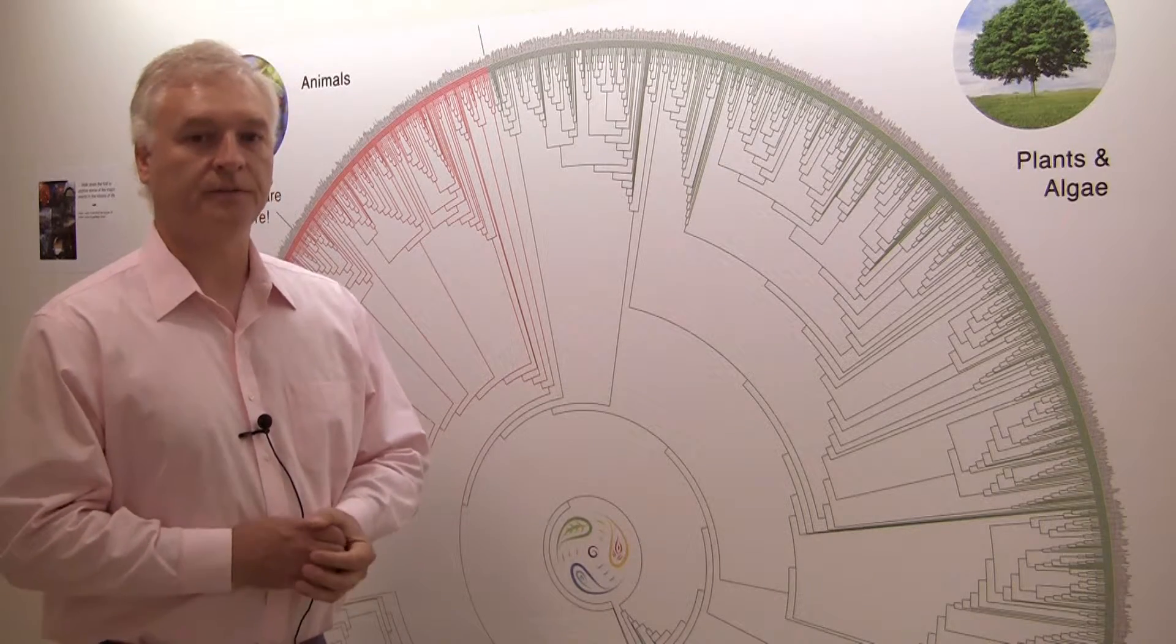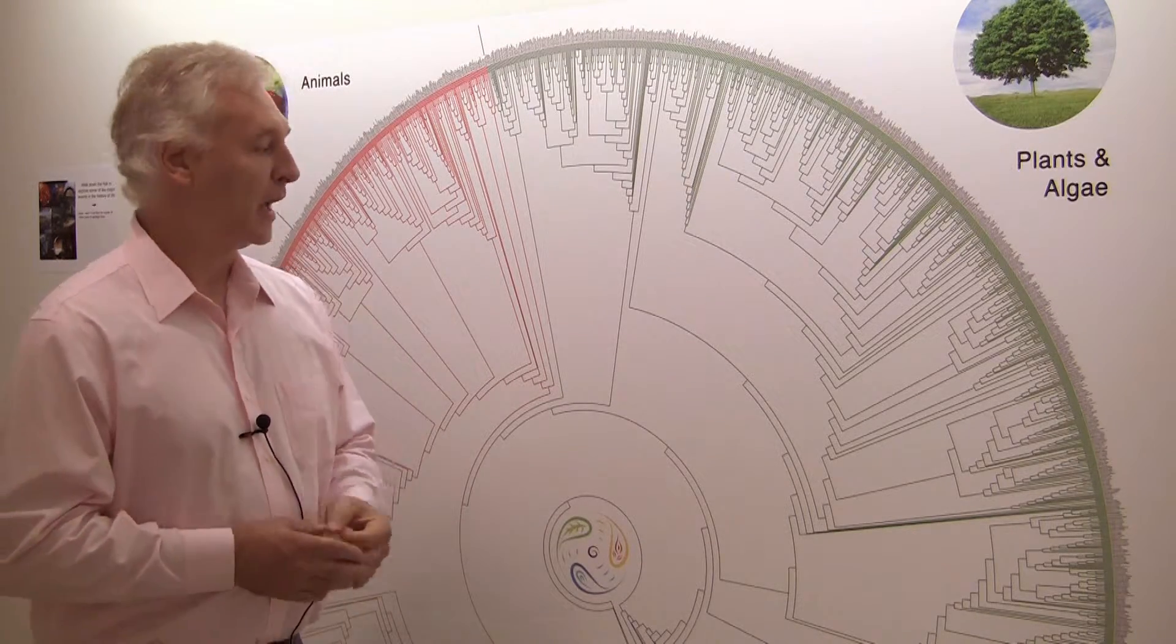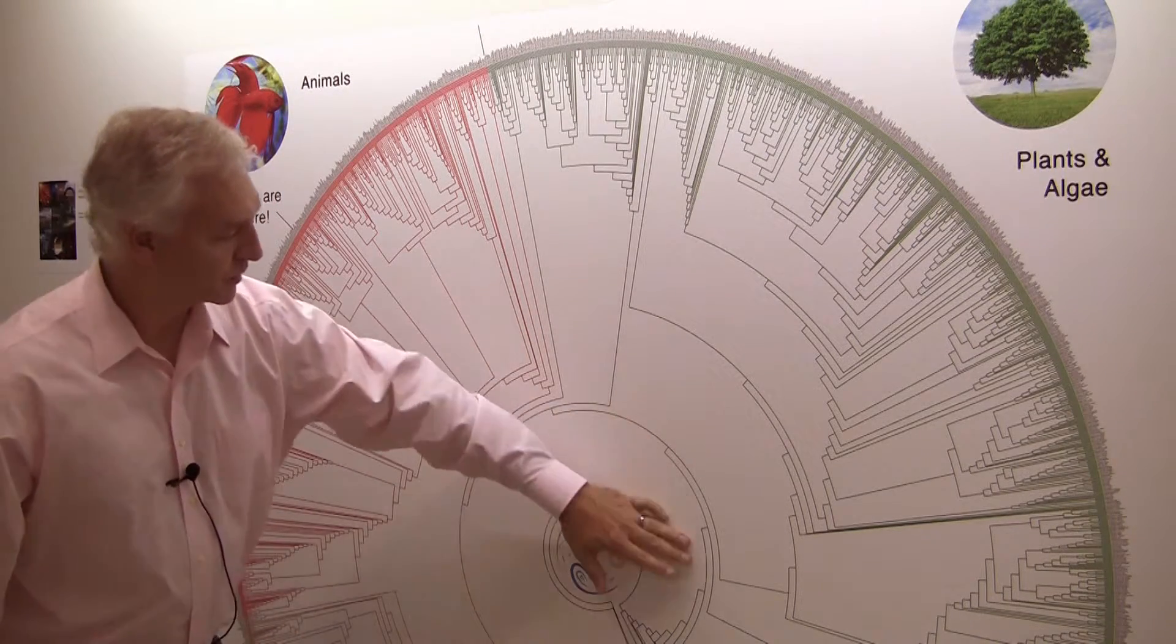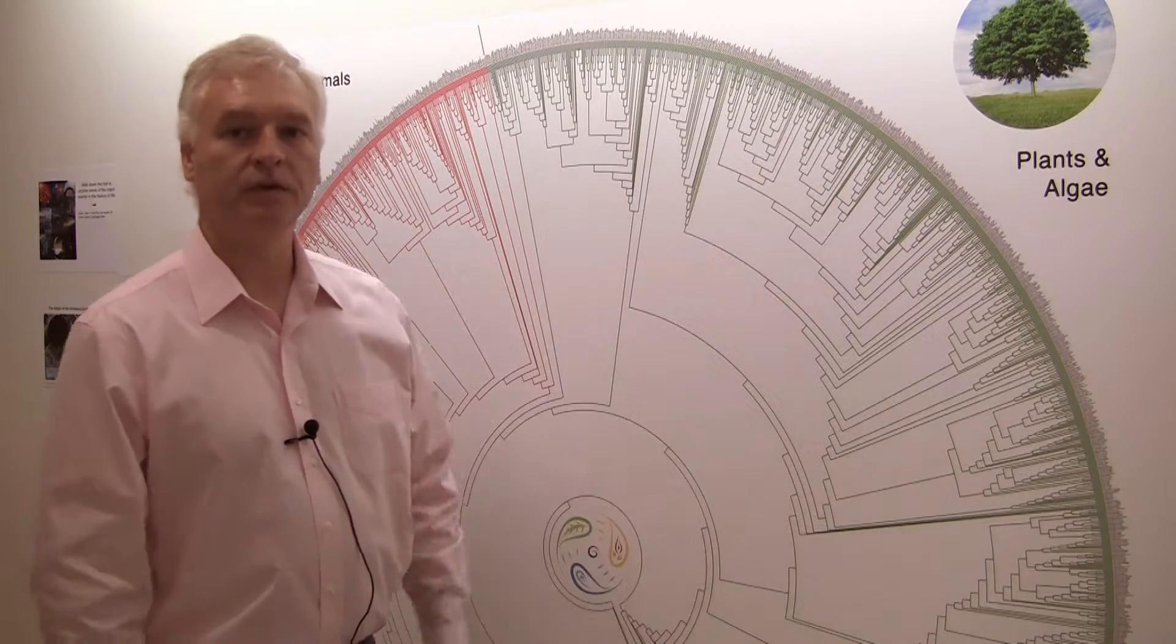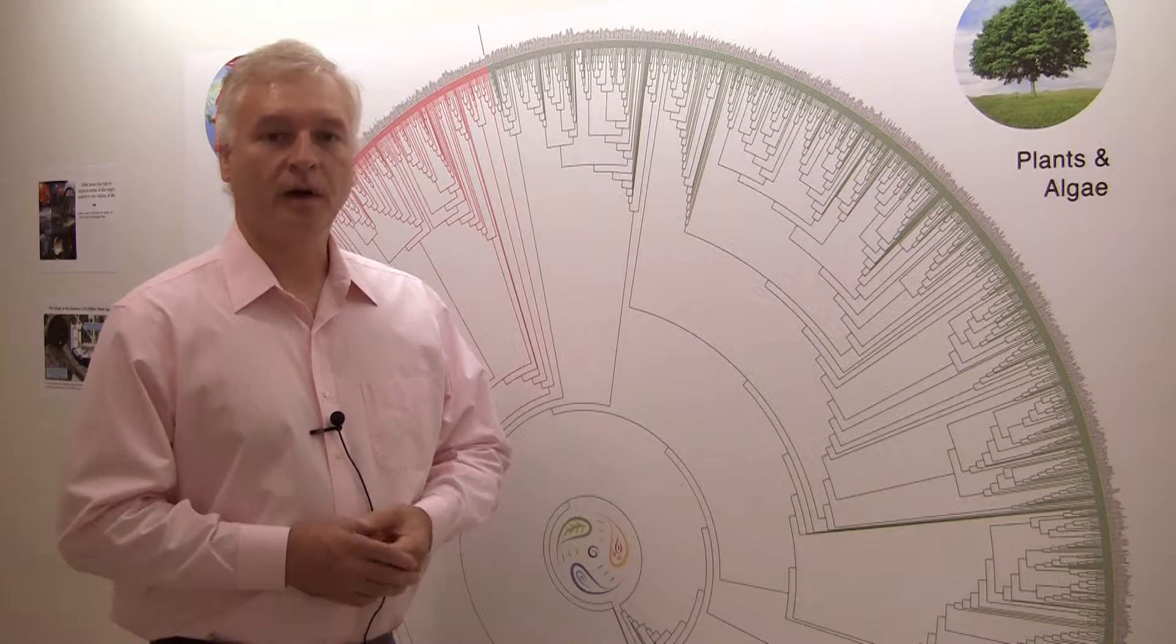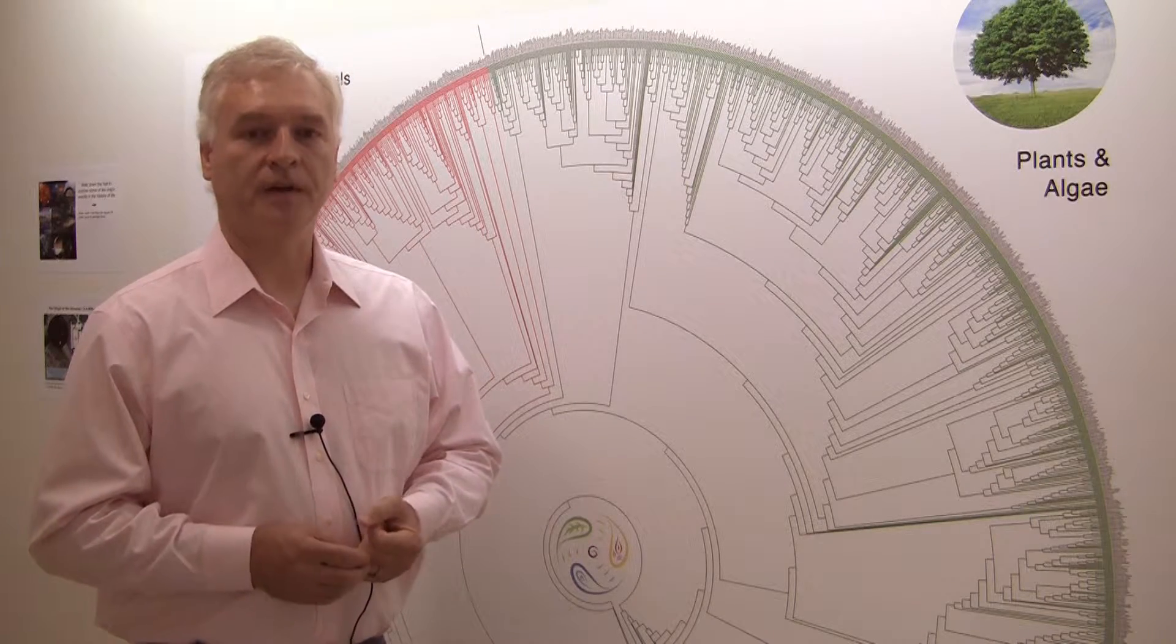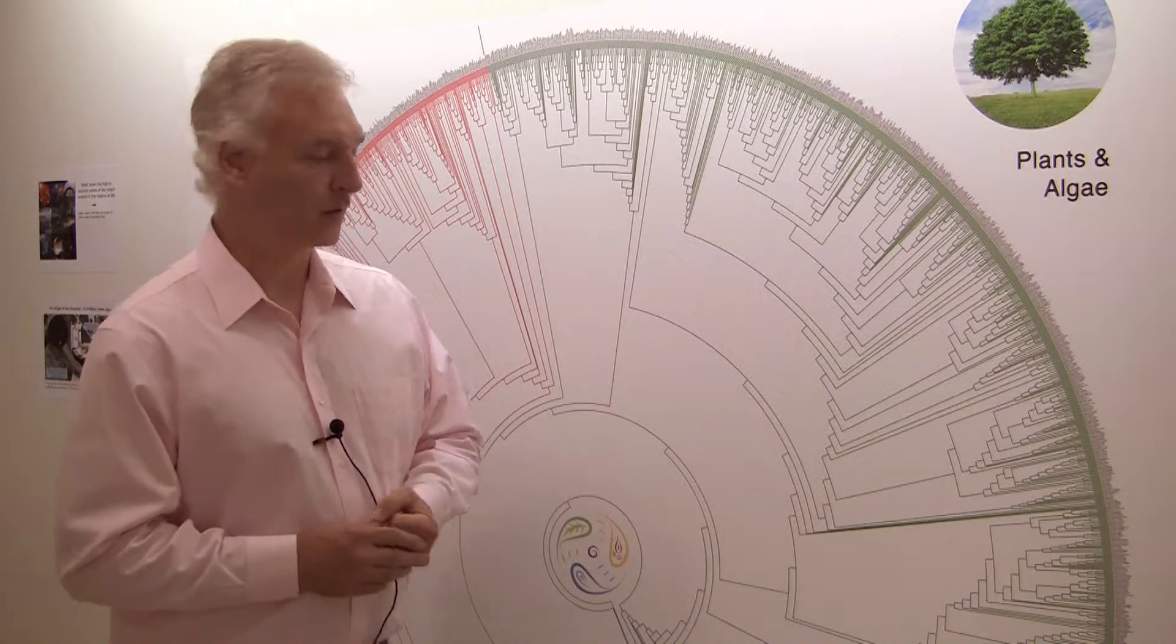So we're going to take the gene superoxide dismutase, understand how it functions, and trace it back to approximately somewhere in this region of the tree about two and a half billion years ago to the origins of oxygen photosynthesis and then the subsequent evolution of photosynthetic systems over the last two and a half billion years.